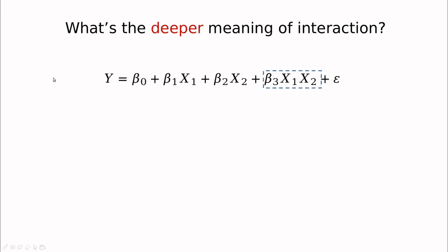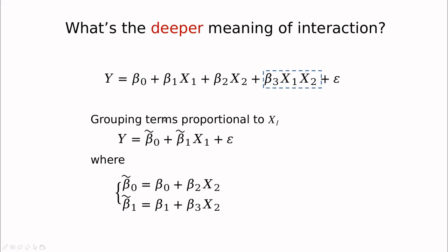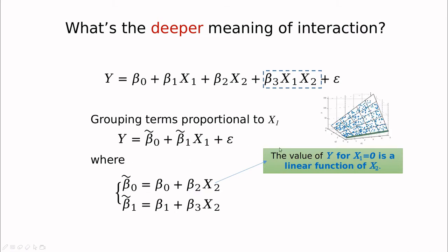So what's the deeper meaning of interaction? Let's go back to this formula. Let's do this mathematical trick in which I'm grouping together terms proportional to x1. And now this looks like a good old linear regression with just one variable, which is x1. But here is the trick. So basically we have defined a new intercept and a new slope, and these are functions of x2. So for x1 equals 0, this is a linear function of x2. And this resembles basically what I'm doing here. But the good thing is that now we can see that this beta 0 with a tilde is like an x2 dependent intercept. So we are basically changing the point in which we are crossing, and you can see that here. And the same with the slope. So we have different slope for different values of x2, and these are captured by these lines here that you can see that are steeper and steeper.